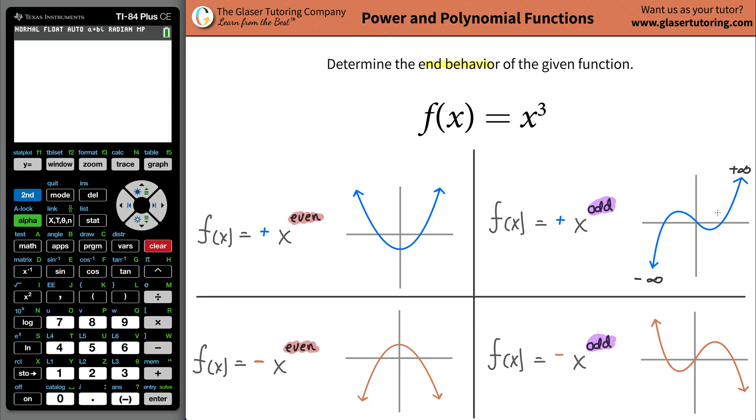So you can write this out. In terms of the end behavior, you can write out: as x approaches negative infinity, the function's value approaches negative infinity. And then conversely, as x approaches positive infinity, the function's value f of x approaches positive infinity.